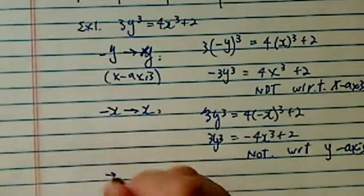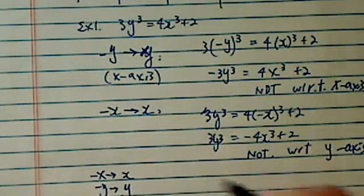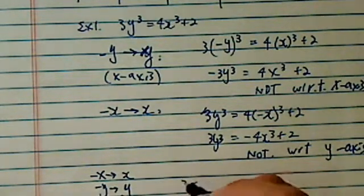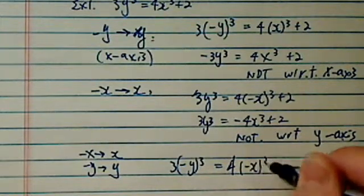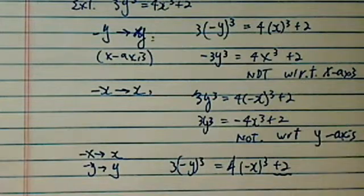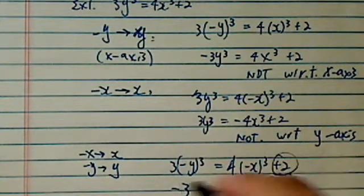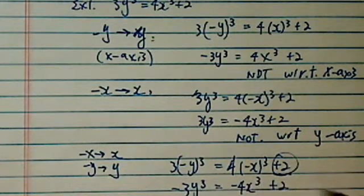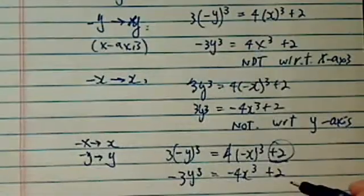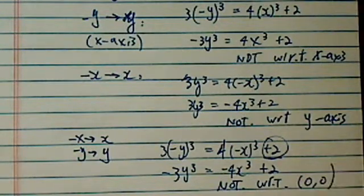Let's try one more. Minus x to x, minus y to y. Let's see what we have. So we have 3(-y)³ = 4(-x)³ + 2. Now without the x² here, we actually would get back where we started. But with the linear term here, we got stuck in the sense that we can't recover what we had before. So we couldn't recover the original equation. So not with respect to the origin either.